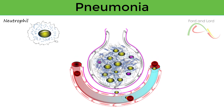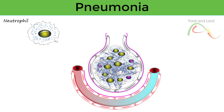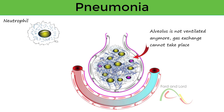The alveoli start getting filled with plasma proteins, which also carry fluid with them, and in the case of damage to the endothelium of the capillaries, even blood can enter into the alveoli. This inflammatory response results in edema formation, accumulation of fluid, pus, and blood within the alveoli and airspaces. The patient now has the condition known as pneumonia.